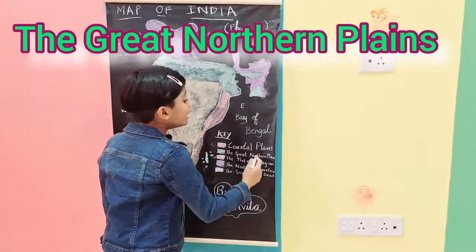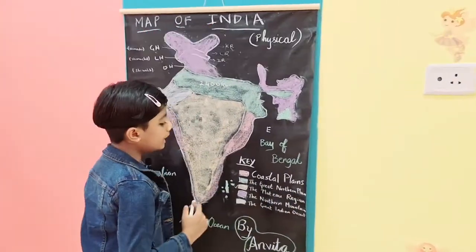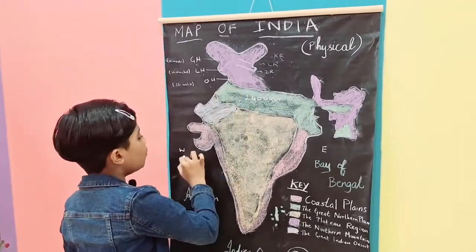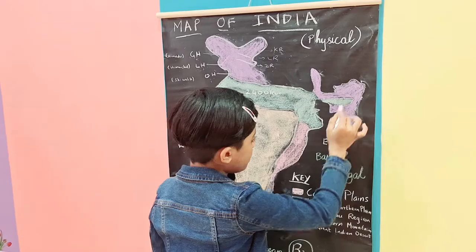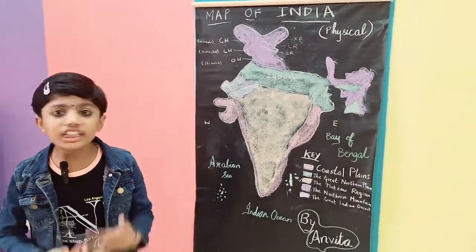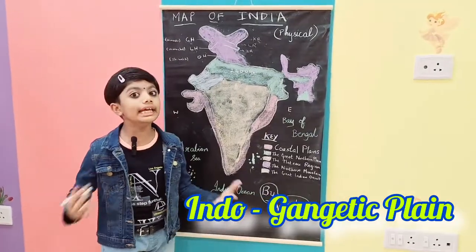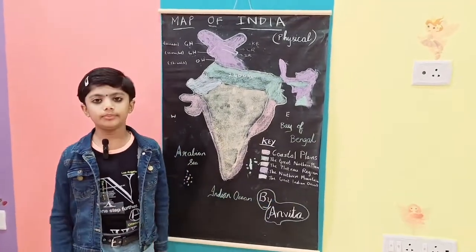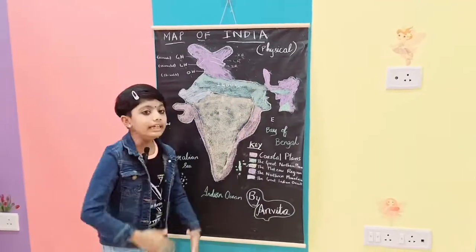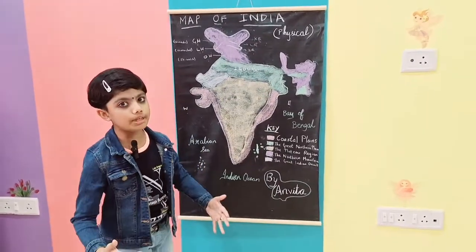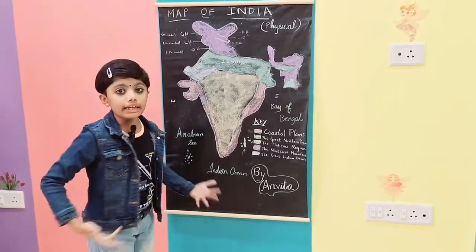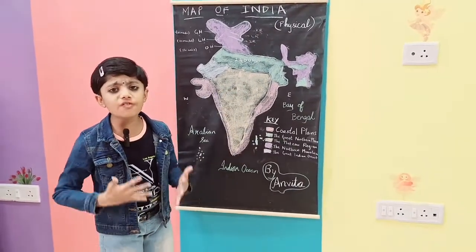Now let's go to the Great Northern Plains. The Great Northern Plains extend from the state of Punjab in the west to the state of Assam in the east, for a distance of 2,400 kilometers. This is also called the Indo-Gangetic Plain. The rivers that originate from the Himalayas carry large quantities of sediments, which get deposited in the northern plains.